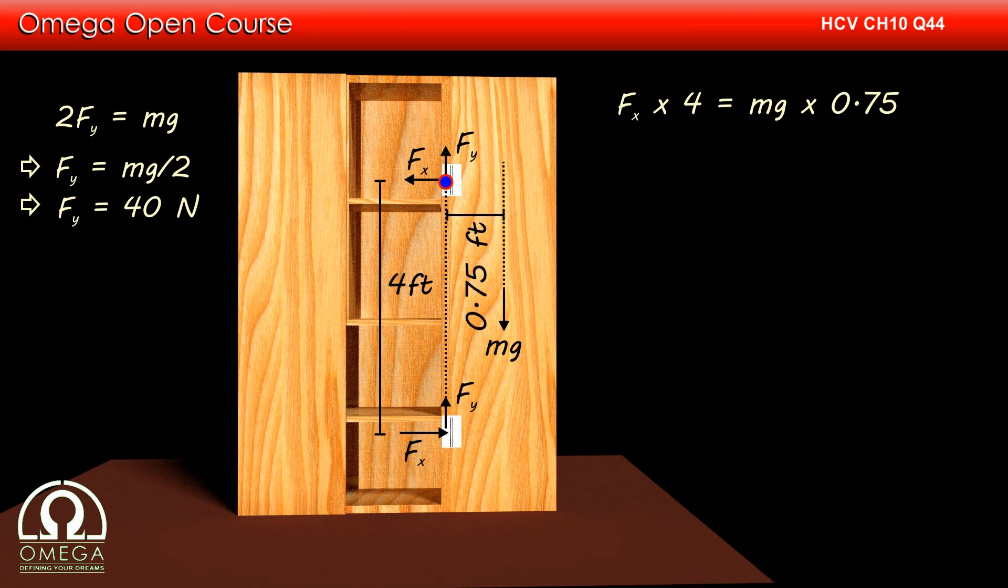Therefore, the torque due to gravity about this point is mg × 0.75 in clockwise direction or into the plane. As both the torques cancel each other out, Fx × 4 must be equal to 8 × 10 × 0.75, or Fx = 60/4 = 15 N.